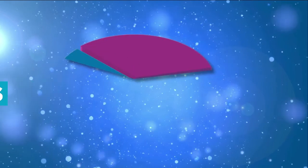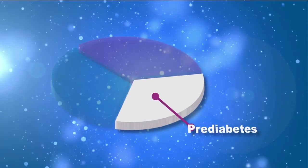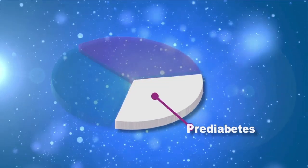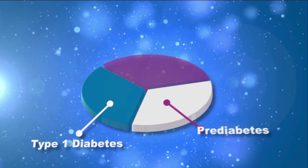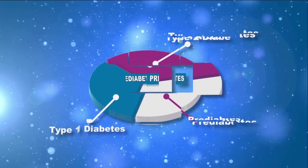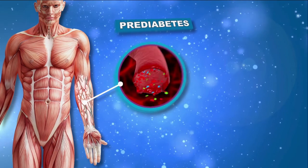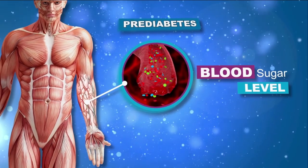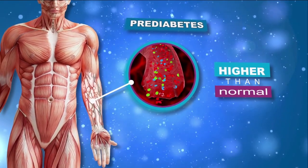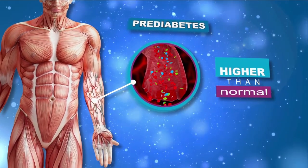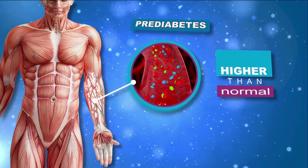Diabetes can be segregated into three main types: pre-diabetes, type 1 diabetes, and type 2 diabetes. Pre-diabetes is a condition in which the blood sugar level elevates to a level higher than the normal range, but is still low enough to not be considered as diabetes.